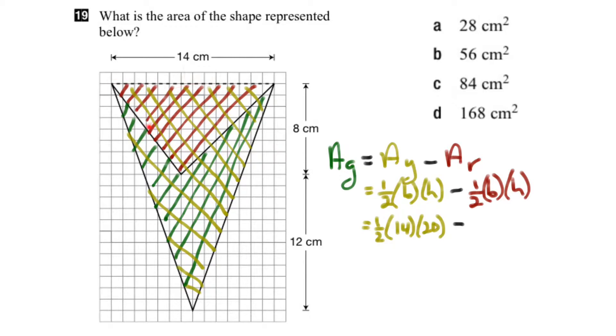Now for the red part, again a triangle, its base is still 14 cm, but its height is 8 cm. So this becomes half of 14 times 8.